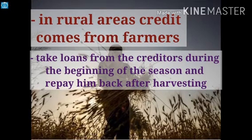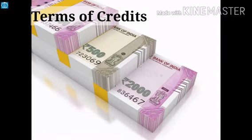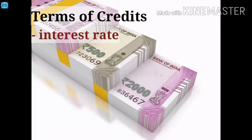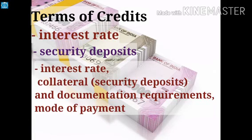But in many cases, repayment doesn't happen, and credit may lead a person into a debt trap. If there is a crop failure, it is difficult for the farmer to repay his loan, and this may lead him to sell a portion of his land to pay off his debts. Every loan agreement specifies an interest rate and principal. When taking a loan, the borrower keeps some security deposit — called collateral — which can be land, vehicles, or livestock. If the borrower fails to repay, the moneylender takes over the collateral. The interest rate, collateral and documentation requirements, and mode of payment are together called the terms of credit.